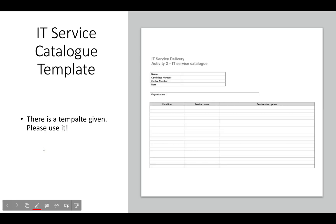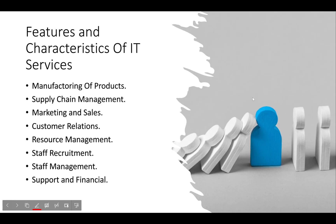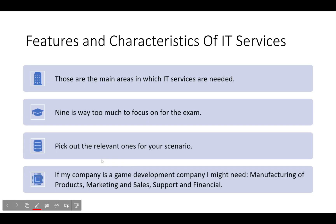This is what the template looks like. We have name, candidate number, centre number, date, and organisation. We have function, service name, and service description — I'll explain all of these. The features and characteristics of IT services taken from the specification document include: manufacturing of products, supply chain management, marketing and sales, customer relations, resource management, staff recruitment, staff management, support, and financials. I think nine is way too many — I'd recommend a maximum of four.